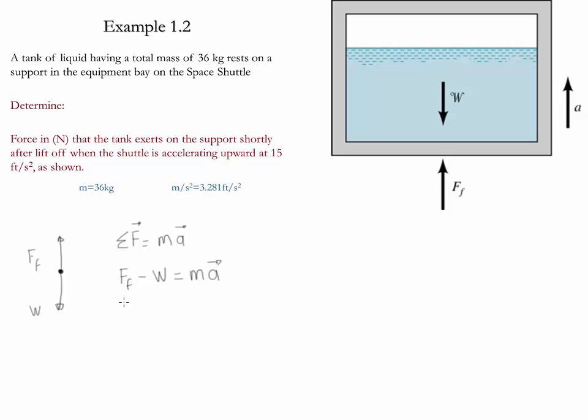If we put these values together, we can see that FF, where we replace the weight with M times g, is equal to mass times acceleration. If we factor out the mass, we can say that FF equals M times g plus a.